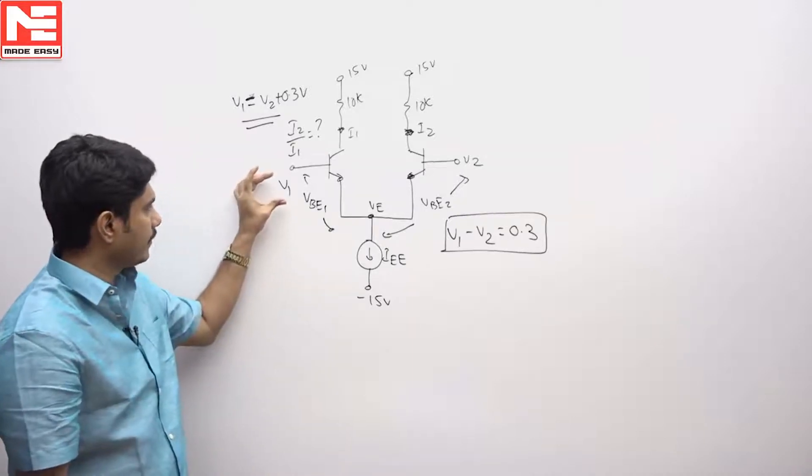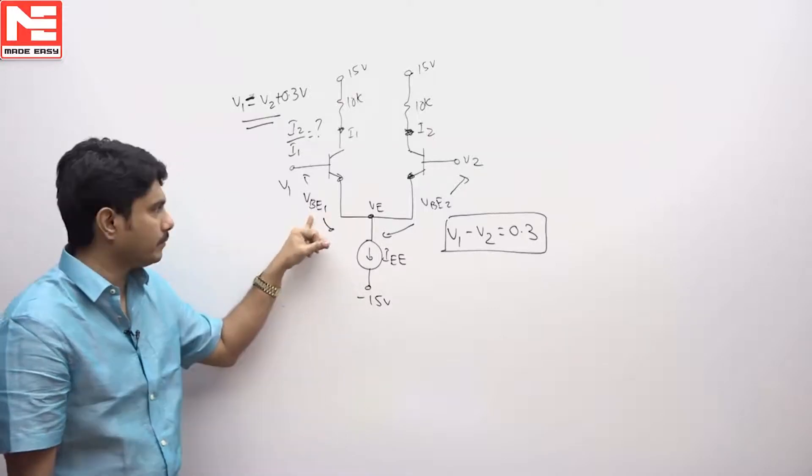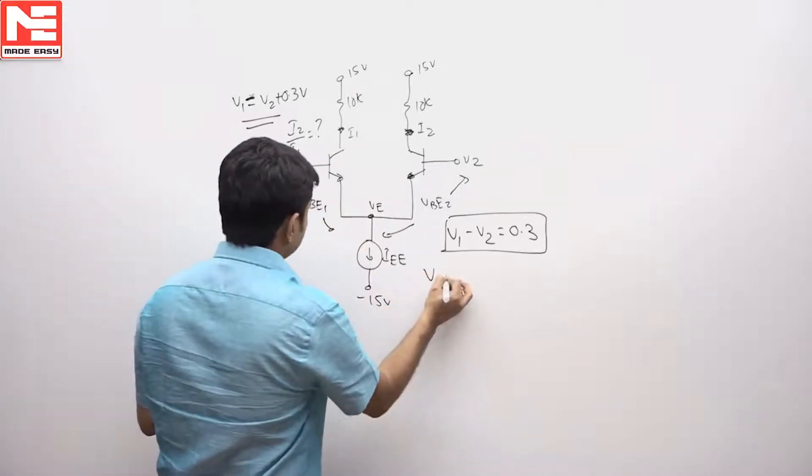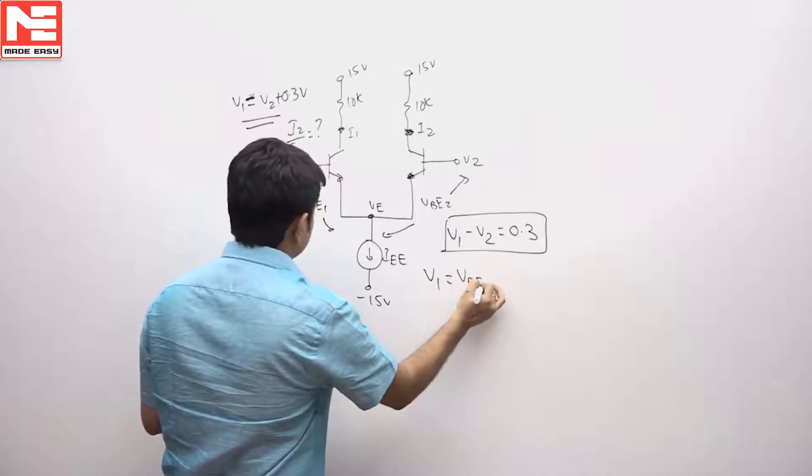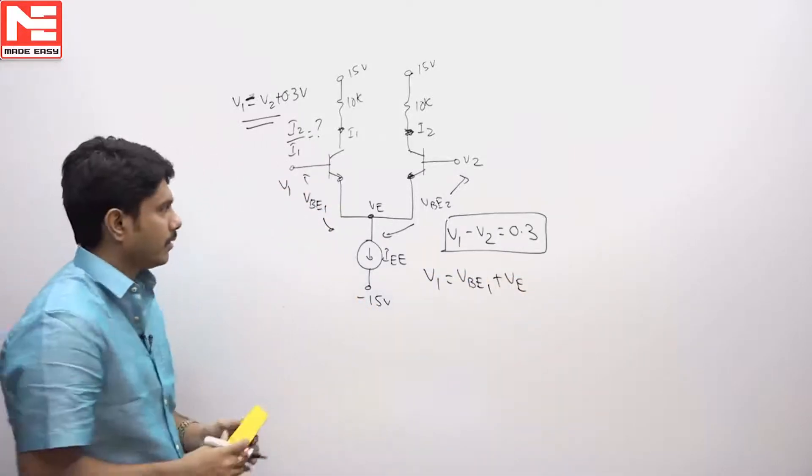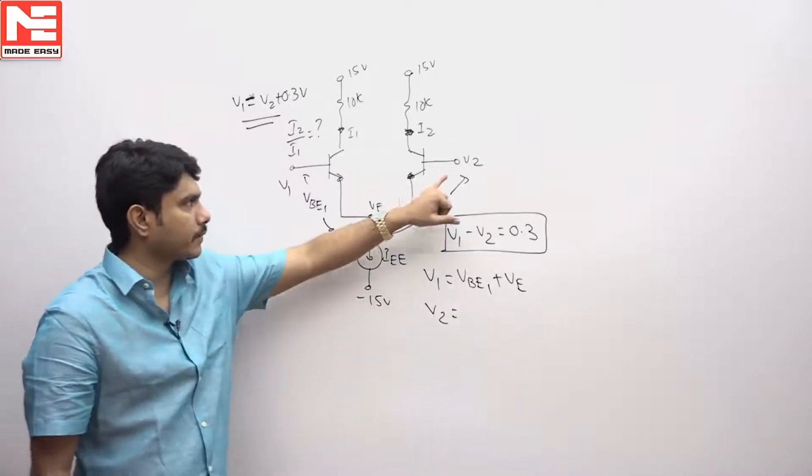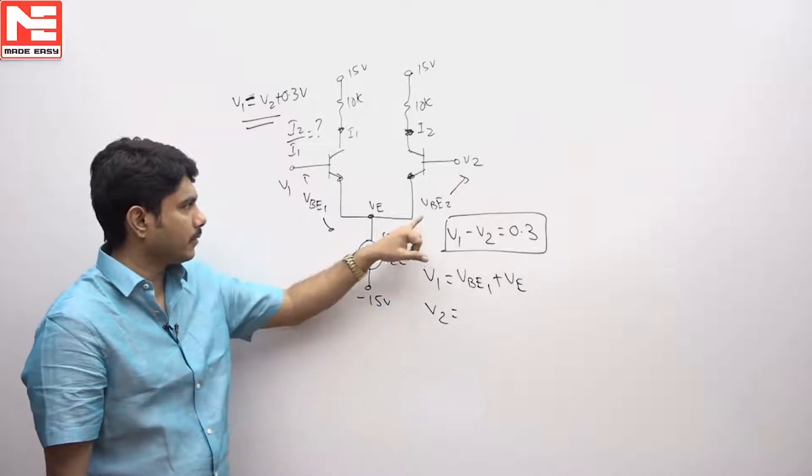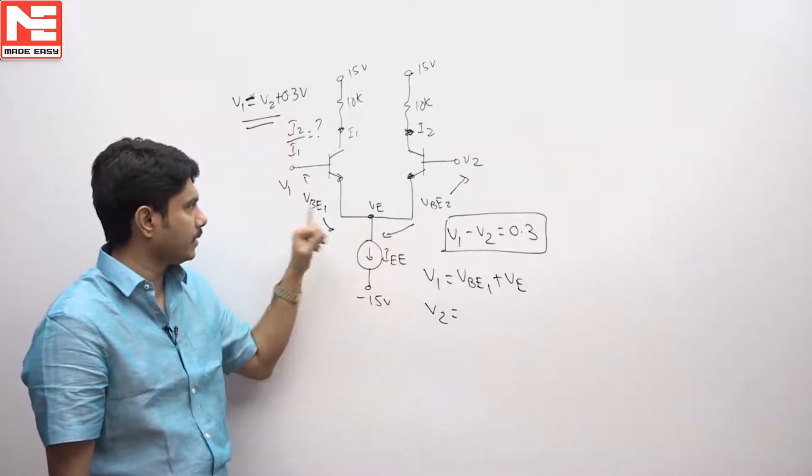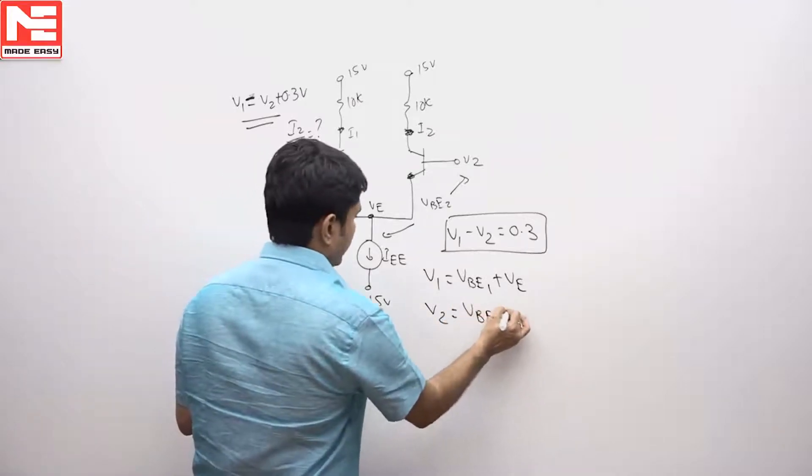But actually V1 is nothing but VB1 plus VE. So V1 is VB1 plus VE. Then what is V2? This side voltage V2 equals VB2 plus VE because VE is common for both potentials.